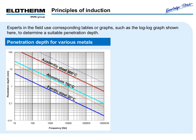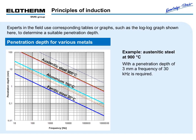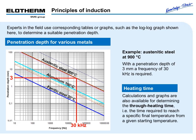Experts in the field use corresponding tables or graphs, such as the log-log graph shown here, to determine a required penetration depth. For example, if the penetration depth of round material of austenitic steel should reach 3 mm, a frequency of 30 kHz has to be set. Calculations and graphs are also available for determining the through-heating time — for example, the time required to reach a specific final temperature from a given starting temperature.